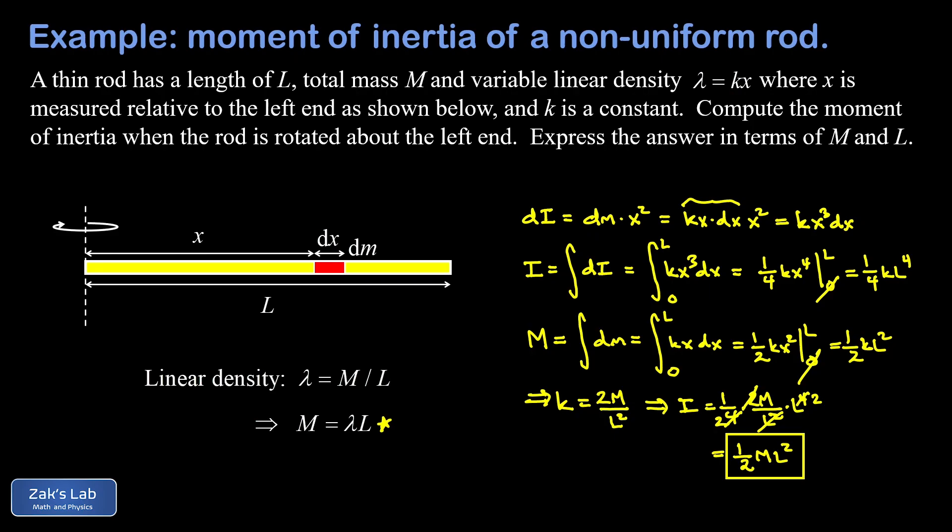Now it's interesting to compare this result to the result we got previously for the uniform rod. Remember the result for a uniform rod rotated about one end is a moment of inertia of one third ML squared. And one half ML squared is bigger than that.